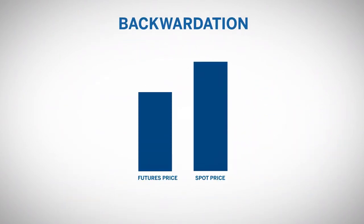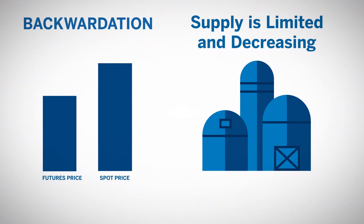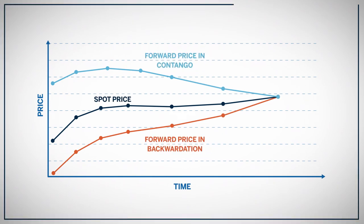Agricultural products typically trade in backwardation, where the forward price is less than the spot price. This is because once harvested, supply can only decrease until the next harvest. This creates a situation where spot prices can be higher nearing the end of the supply cycle, and futures contracts that expire after the next harvest can be bought more cheaply, since supply will be higher after the next crop is harvested.